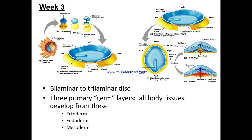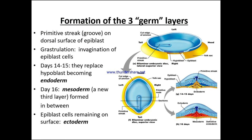From the epiblast and the hypoblast, with the primitive streak, we eventually have the ectoderm, the mesoderm, and the definitive endoderm at around 16 days. The primitive streak is a groove on the dorsal surface of the epiblast. At days 14 to 15, invaginating epiblast cells replace the hypoblast, becoming the endoderm. On day 16, the mesoderm — a new third layer — is formed in between. The epiblast cells remaining on the surface become the ectoderm.